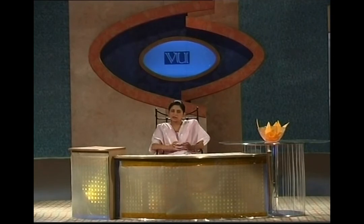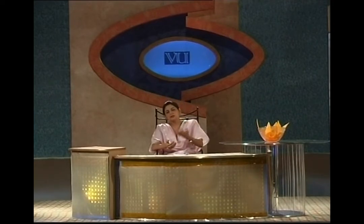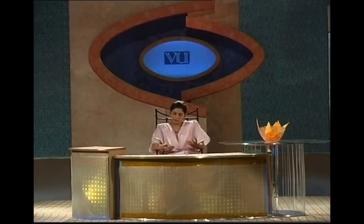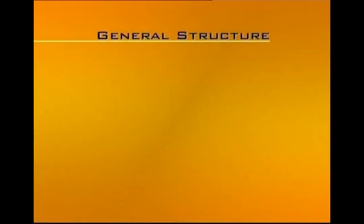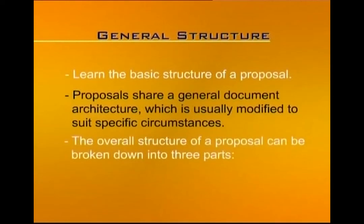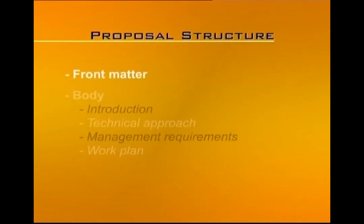Most proposals share the same general structure for identifying the motivating problem, the objectives, and the proposed course of action. The overall structure of a proposal can be broken down into three parts: the front matter, the body, and the end matter. The front matter includes the letter of transmittal, the title page, summary, table of contents, and a list of figures and tables. The body will include the identification of the motivating need or problem, the technical approach, management requirements, and the work plan.